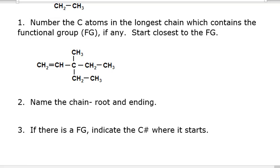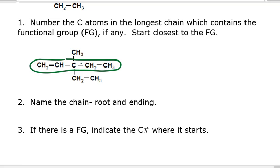Remember, functional groups are things other than carbon and hydrogen single bonds. We're going to first identify the longest chain of carbons that contains the functional group. In this molecule, the functional group is an alkene, so the longest chain would be this one, although you could go down and have the same length of chain. It would still be five carbons in the chain. Either one is acceptable and will yield the same name.